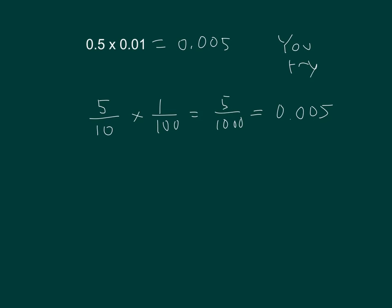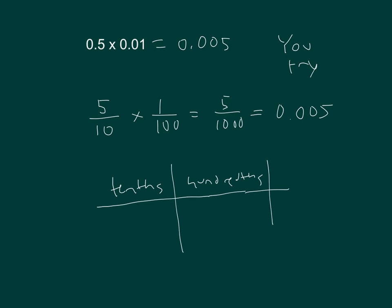We also could have used a place value chart: five-tenths, tenths, hundredths, thousandths — and multiplying by a hundredth is shifting the decimal point over twice. So I have to move the digit over twice to the thousandths place.